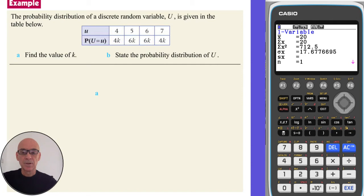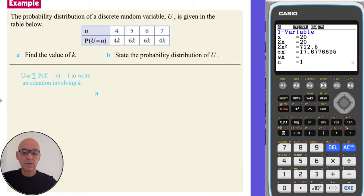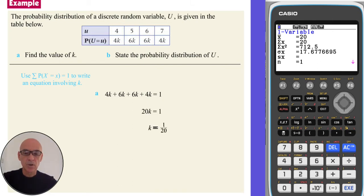In this question we're first asked to find the value of K in the given probability distribution. We start by using the fact that the sum of the probabilities always equals one to write an equation involving K. Solving that equation algebraically gives K equals 0.05 as shown.